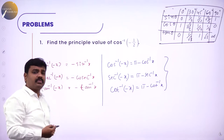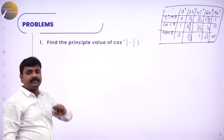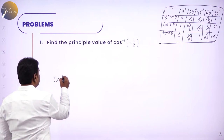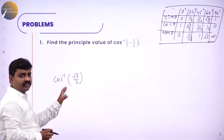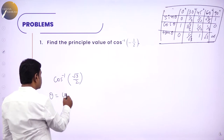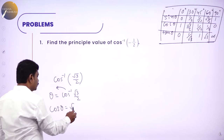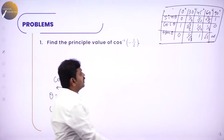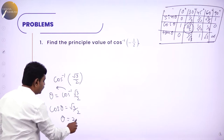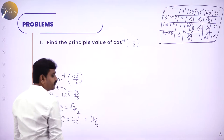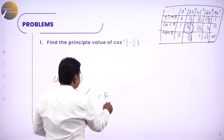Now, a simple example: find the value of cos inverse(√3/2). Take theta equal to cos inverse(√3/2), so cos theta equals √3/2. In the cos table, cos 30° gives √3/2. So theta equals 30°, which is π/6. Therefore cos inverse(√3/2) equals π/6. For standard angles you can write the answer directly from the table without showing all steps.